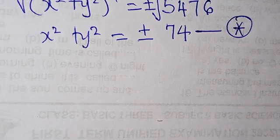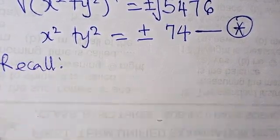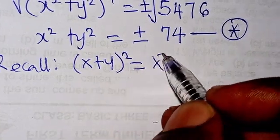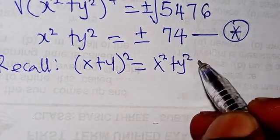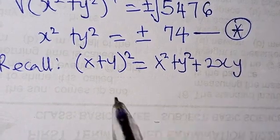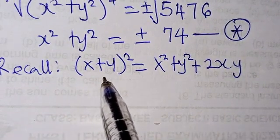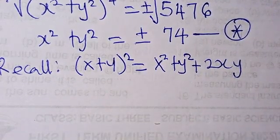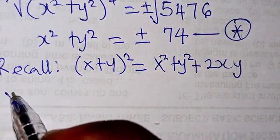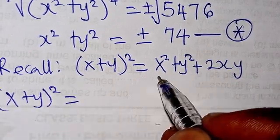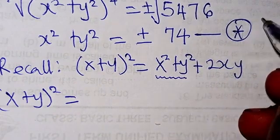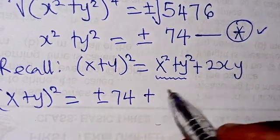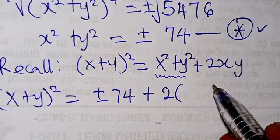Now I want us to recall that x plus y all squared equals x squared plus y squared plus 2xy. We are going to apply this identity because what we are looking for is x plus y. So x plus y all squared equals x squared plus y squared, which is plus or minus 74, plus 2xy.